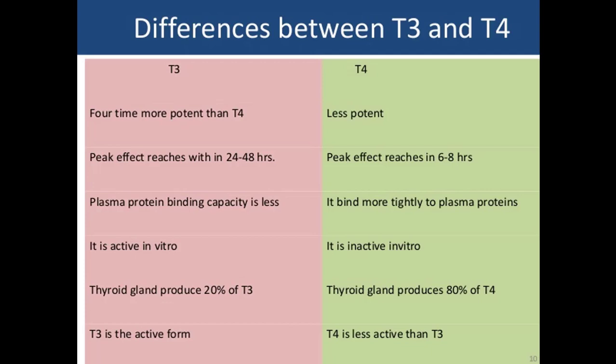The peak effect of T3 reaches within 24 to 48 hours, while the peak effect of T4 reaches in 6 to 8 hours. The plasma protein binding capacity of T3 is less compared to T4. T3 is active in vitro while T4 is inactive in vitro. The thyroid gland produces 20% T3 and 80-90% T4. T3 is the active form while T4 is less active.